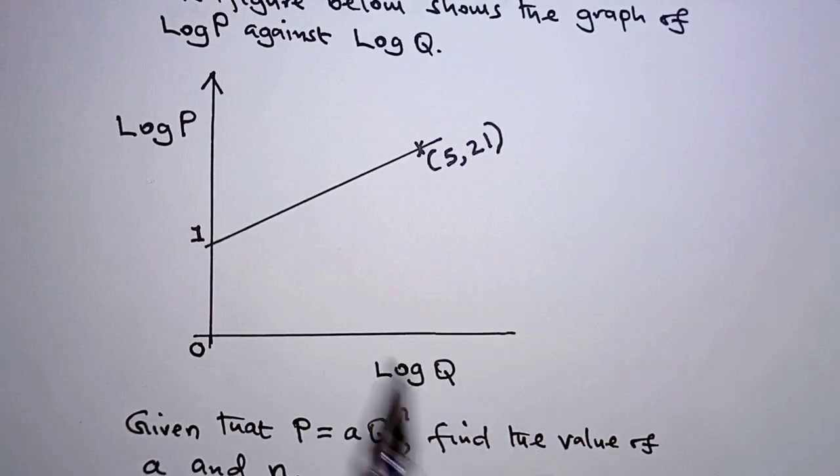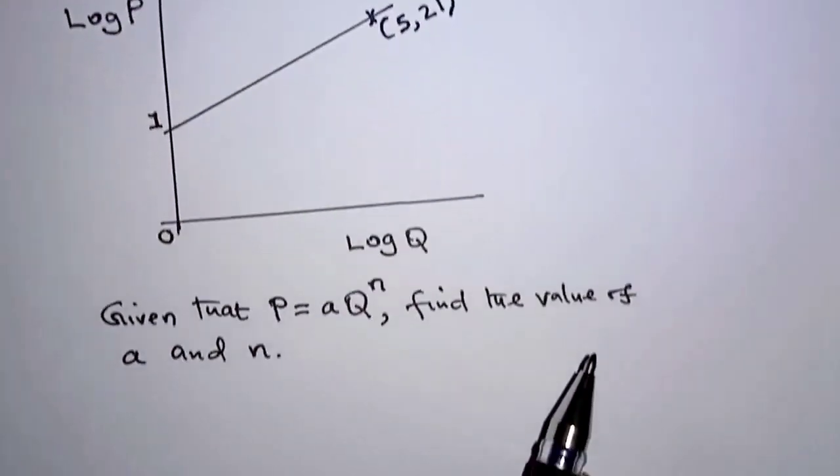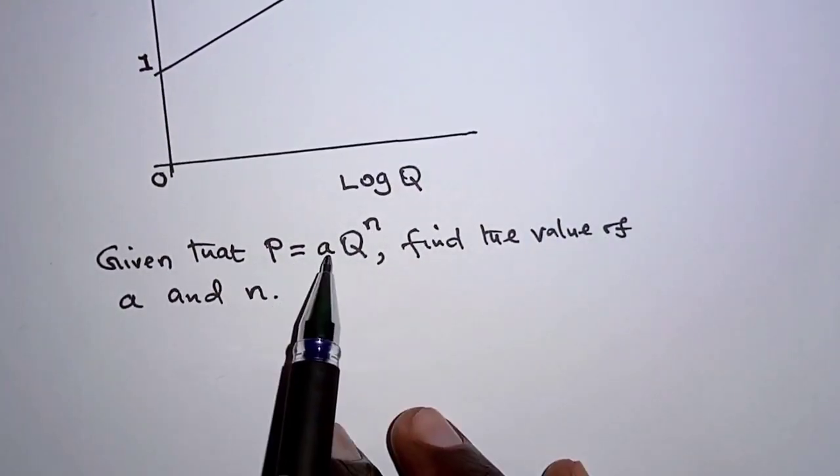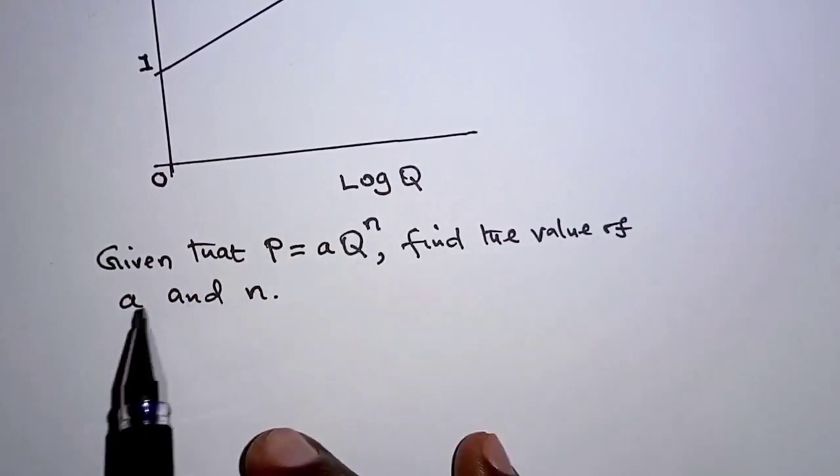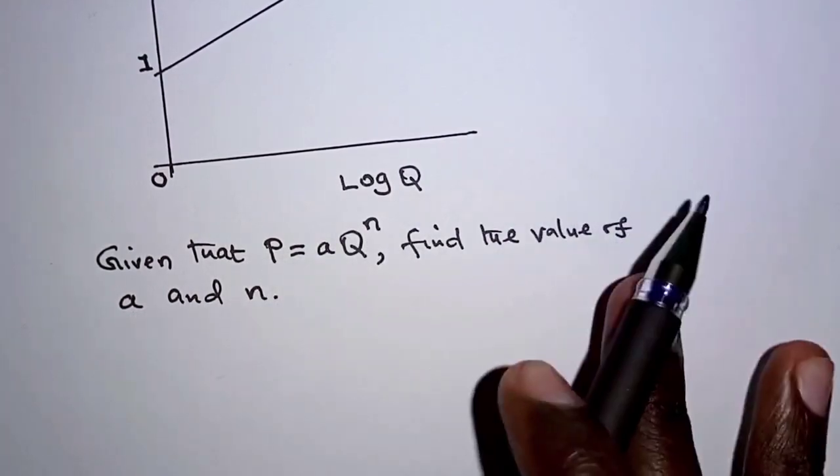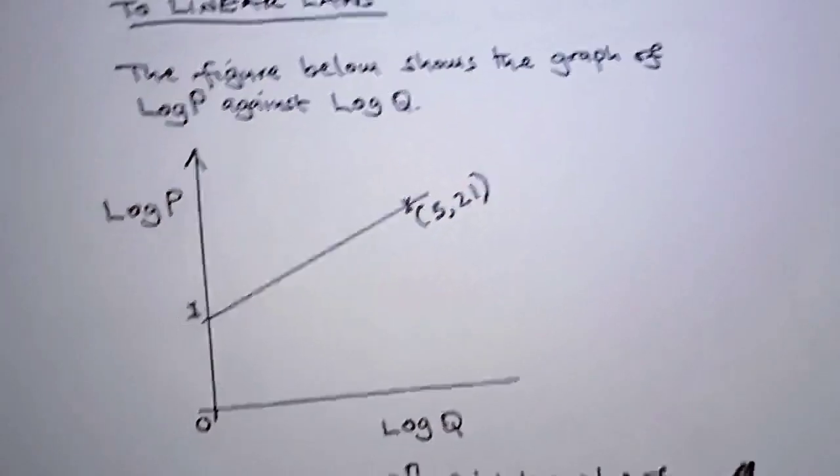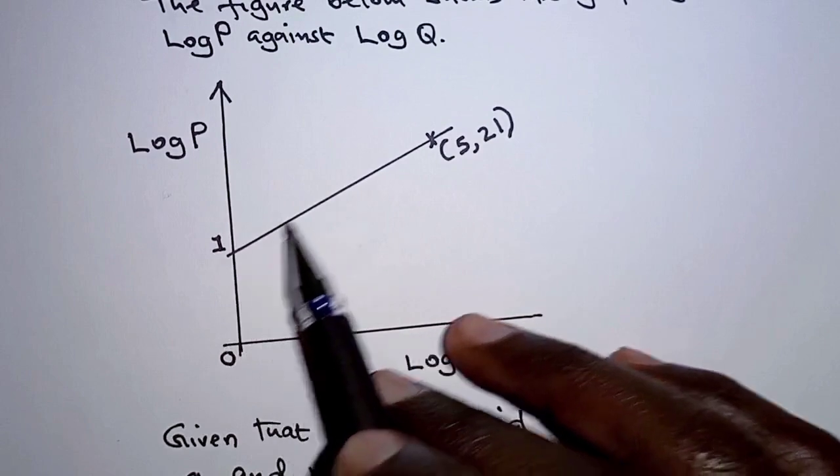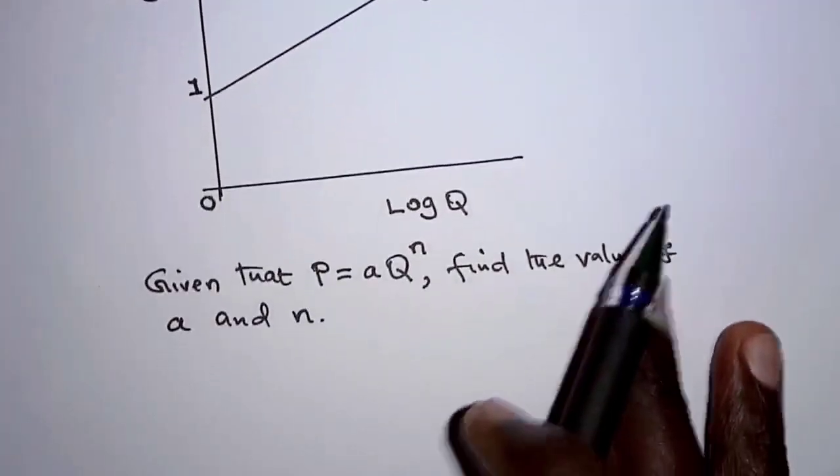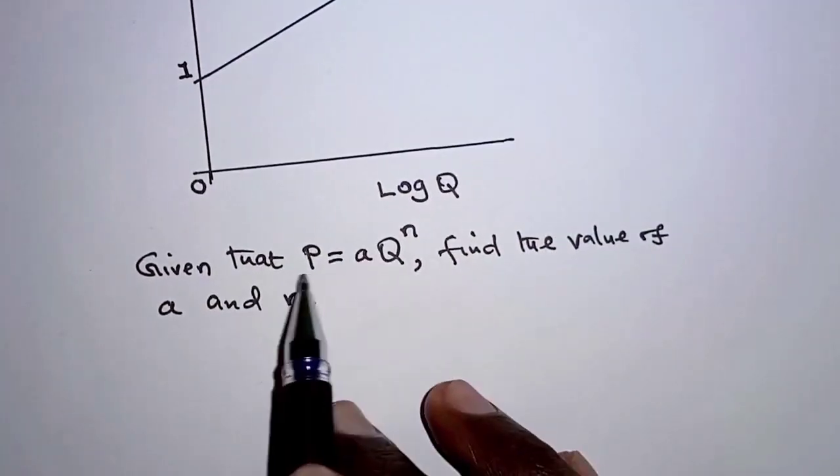So we have the graph as shown here. And then given that P is equal to A Q raised to N, find the value of A and N. We see in this diagram, we have a straight line graph and the law we have here is nonlinear.